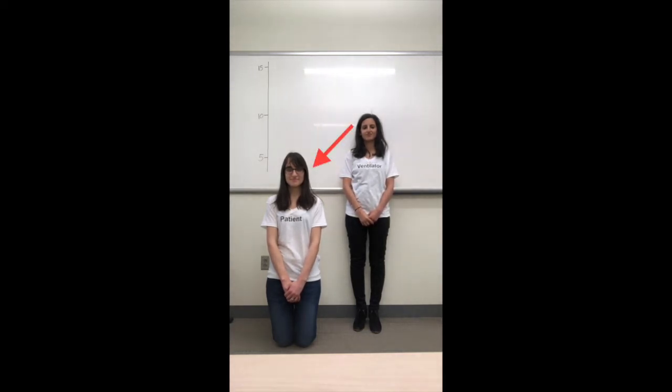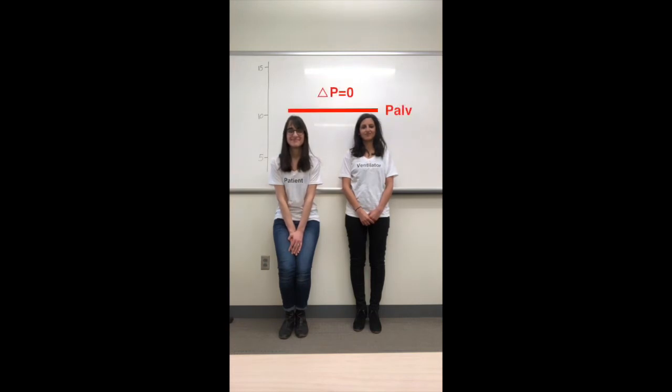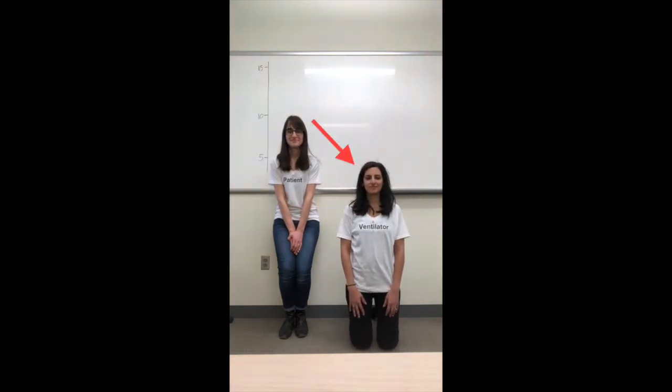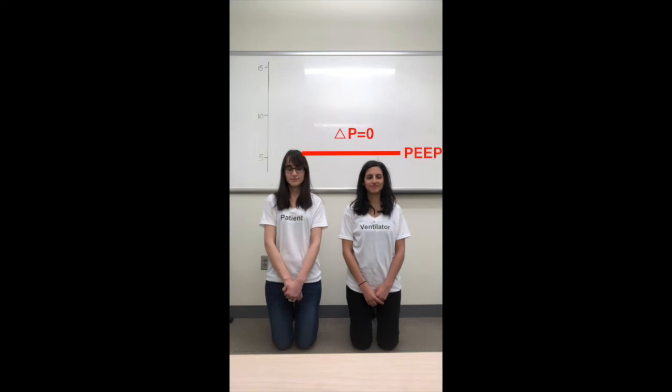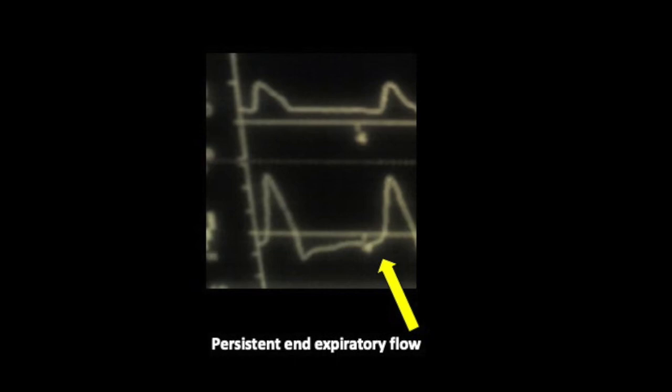In a typical passive patient without auto-PEEP, during inspiration, the pressure rises in the ventilator — I'm going to stand up to demonstrate that there is now high pressure in the ventilator. There is a delta P, or pressure differential, therefore flow is going to go into the patient and my friend is going to stand up as tall as me. Now that we are at the same pressure at the end of inspiration, there is no more flow and inspiration has ended. Then during exhalation, I as the ventilator go back down to PEEP, and she also kneels back down to the same level, so we are both back to PEEP at the end of exhalation. Because our delta P is zero, there is no flow at the end of expiration — in contrast to a situation with auto-PEEP, where there would remain a delta P manifest as persistent end-expiratory flow visible in the ventilator waveforms.